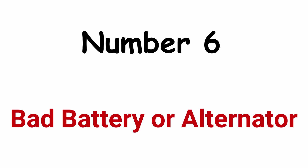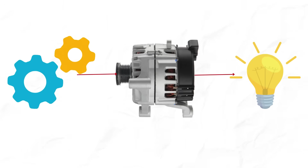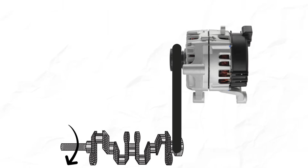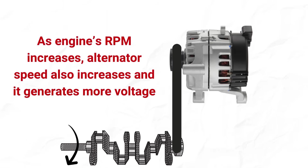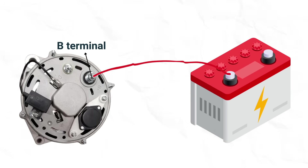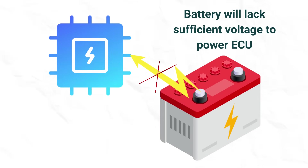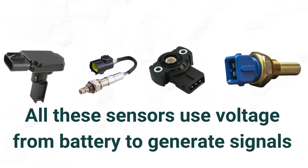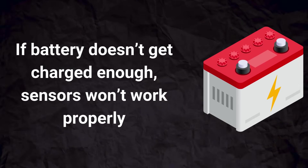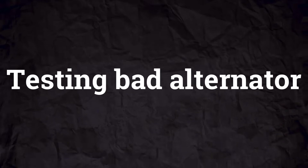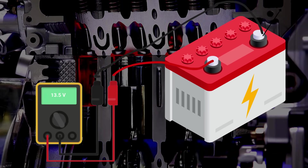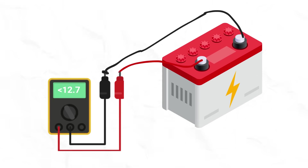Cause #6: Bad battery or alternator. The alternator converts the engine's mechanical energy into electrical energy, functioning as a generator driven by the crankshaft through a serpentine belt. As engine RPM increases, the alternator speed also increases to generate sufficient voltage to charge the battery. If the alternator is stuck or not turning freely, it may not produce sufficient voltage at idle, causing the battery to lack sufficient voltage to power the ECU. To properly test the alternator, start the engine — the battery terminals should show approximately 13.5 volts; anything below 12.7 volts may indicate a faulty alternator.